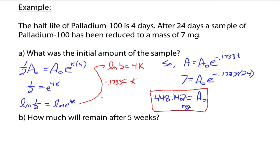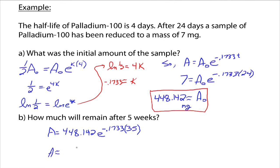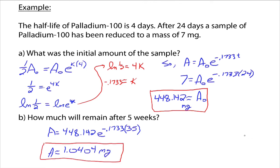For part B: how much will remain after five weeks? We're looking for A. We now know A naught is 448.142 milligrams, the decay constant is negative 0.1733, and T is in days. We want to know how much remains after five weeks. Five weeks times seven days per week is 35 days. Plugging that into the calculator, A is approximately 1.0404 milligrams. So a little more than one milligram remains after five weeks, from the initial 448 milligrams.